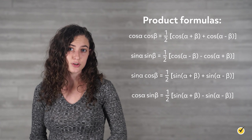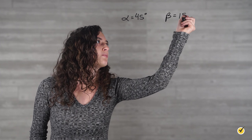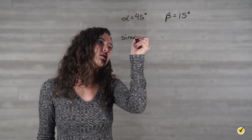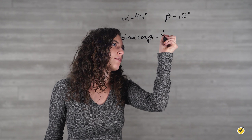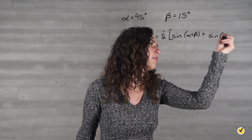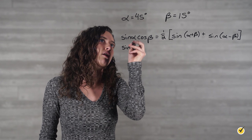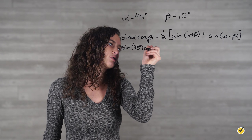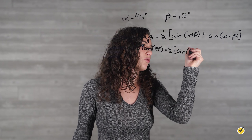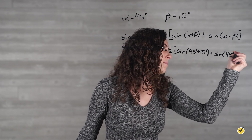We start by establishing alpha as 45 degrees and beta as 15 degrees, so we'll write that information down. Alpha equals 45 degrees and beta equals 15 degrees. Then we write down our formula, making sure we have all the signs right. So our formula is the sine of alpha times the cosine of beta is equal to 1 half times the sine of alpha plus beta, plus the sine of alpha minus beta. Then we substitute in our values: the sine of 45 degrees times the cosine of 15 degrees is equal to 1 half times the sine of 45 plus 15, plus the sine of 45 minus 15.